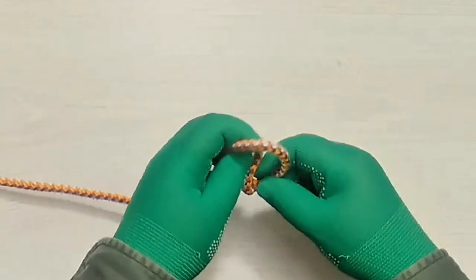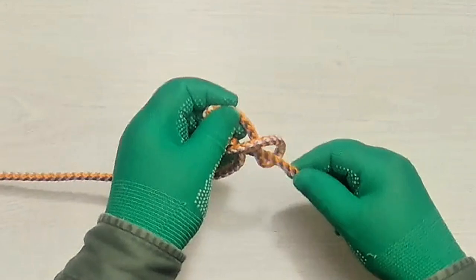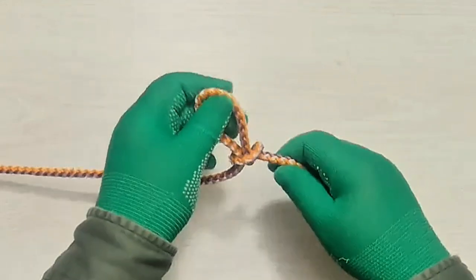Then pass a bight of the standing end through the loop, and then finish by snugging it up tight.